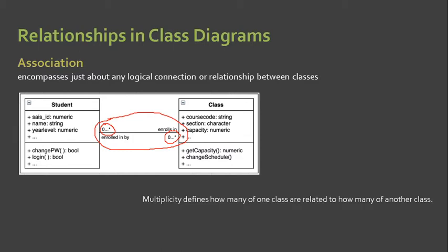It is represented by zero and the asterisk, meaning that is the 'many.' Multiplicity defines how many of one class are related to another class. For example, the student object enrolls in zero to many classes. On the other hand, a class object is enrolled in by zero to many students.